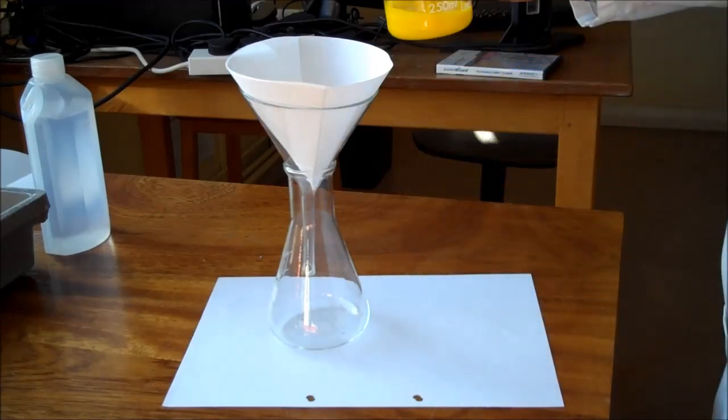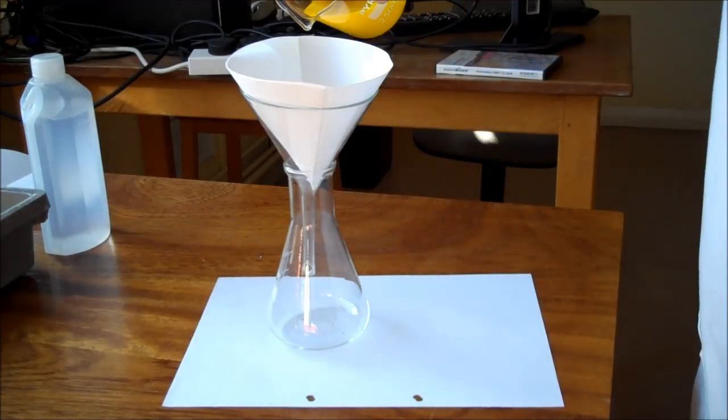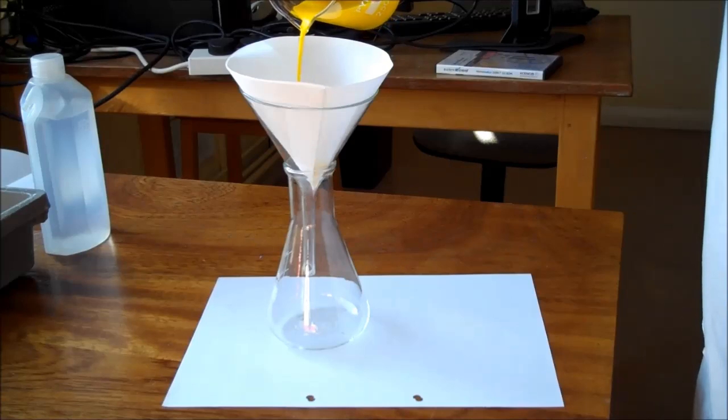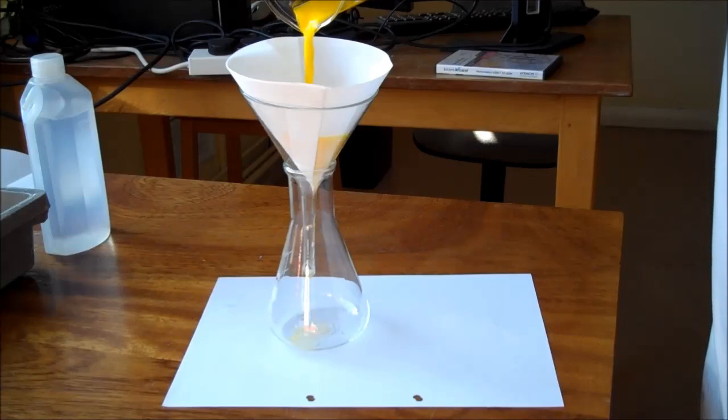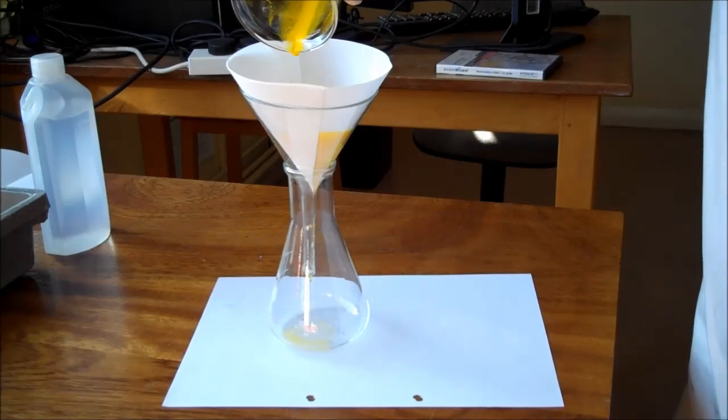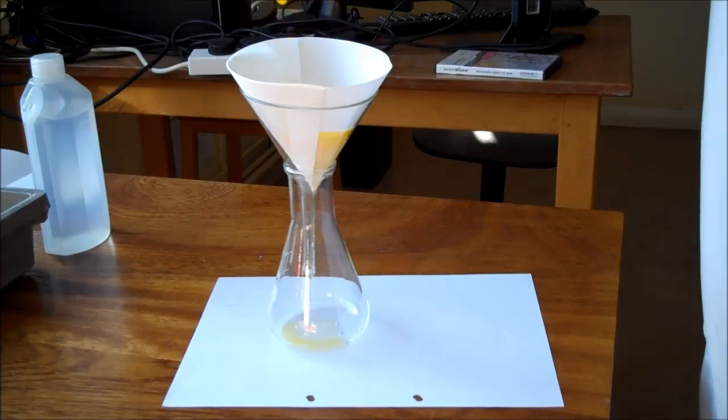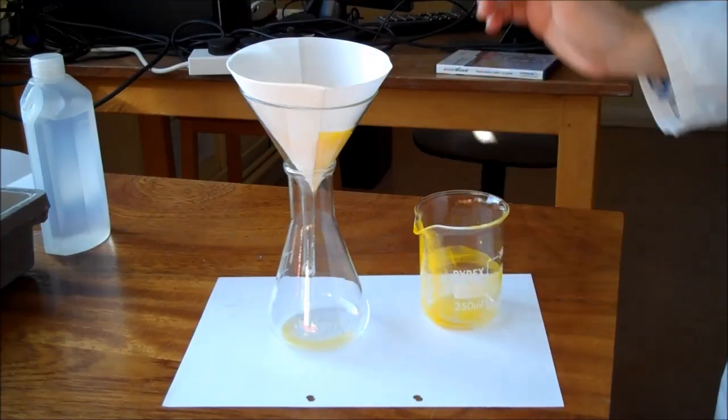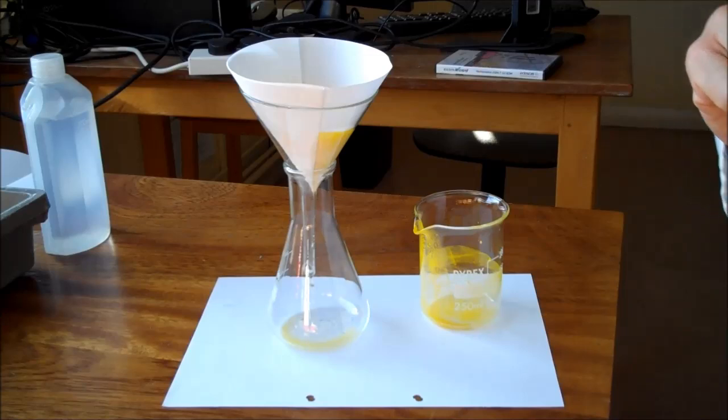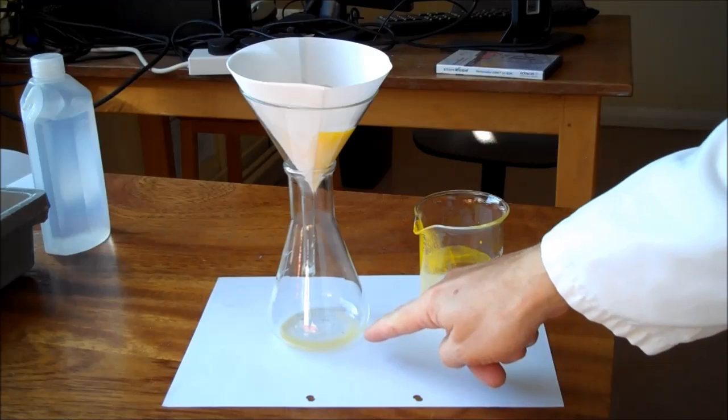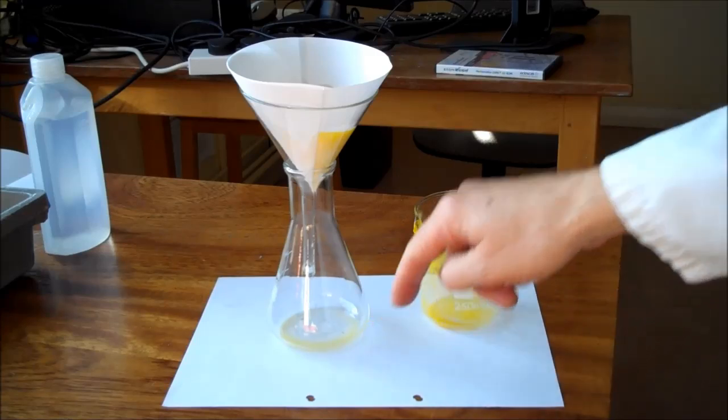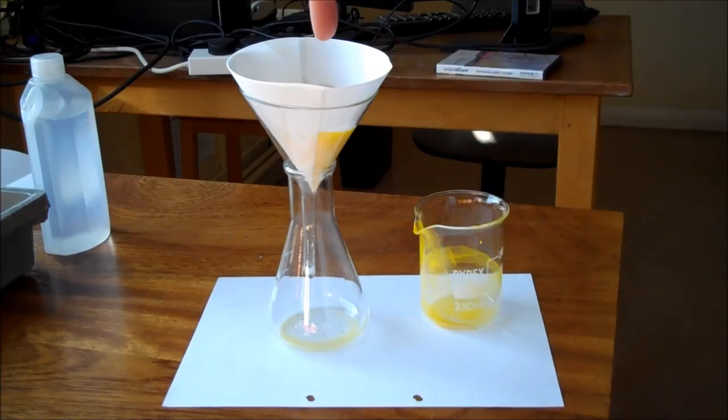We're going to filter off our yellow insoluble solid. Being insoluble, it shouldn't come through the filter paper. You will find that a trace of it does in this case because the particles are so fine, but most of it will stay in the filter funnel. What we're going to end up with is mainly a solution of soluble products and our insoluble precipitate of lead iodide in the filter funnel.